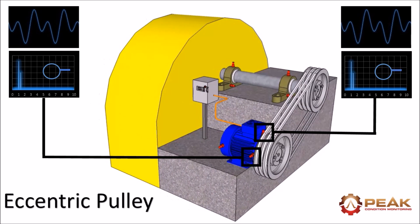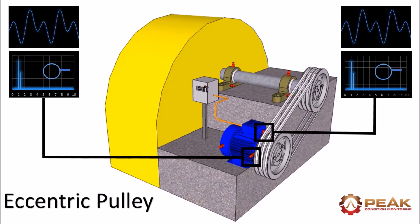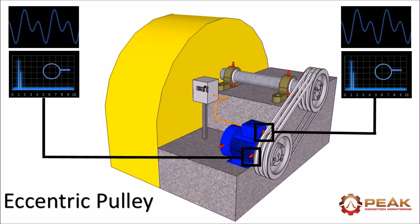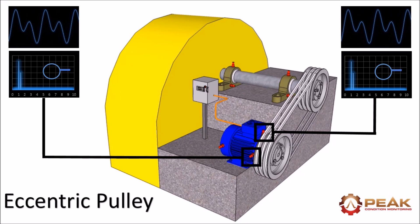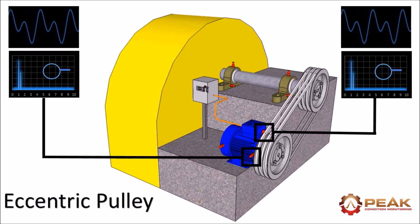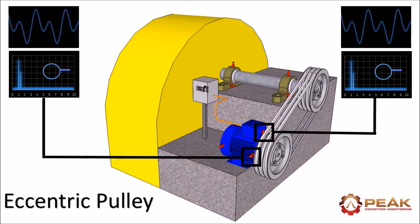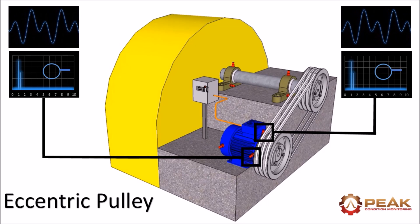Phase can also help to determine the presence of eccentricity in a pulley for example. In this situation the problem would present as two peaks in the radial vibration spectrum. One at the motor speed and one at the fan speed. If the pulley was eccentric the phase of the waveforms would be the same.